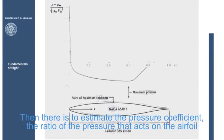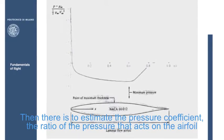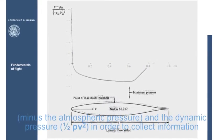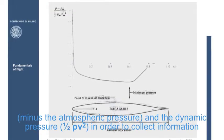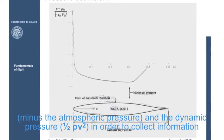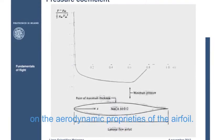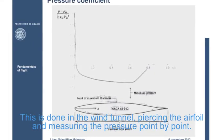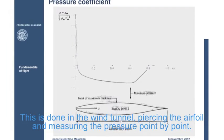Then, there is to estimate the pressure coefficient, that is, the ratio of the pressure that works on the airfoil, minus the atmospheric pressure, to the dynamic pressure, in order to collect information on the aerodynamics properties of the airfoil. This is done in the wind tunnel, piercing the airfoil and measuring the pressure point by point.